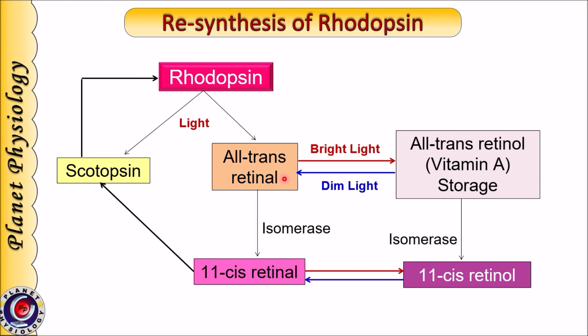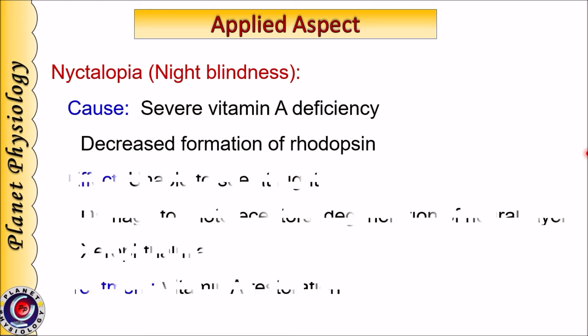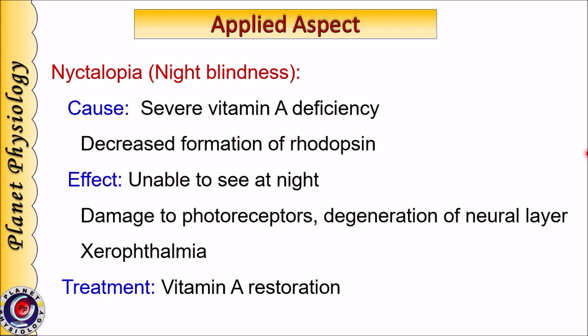Cones show similar changes to rhodopsin but operate during daylight. In case of vitamin A deficiency, a person is unable to synthesize the required quantities of 11-cis retinal during dark conditions. Hence, there is decreased formation of rhodopsin and the person is unable to see properly at night. This condition is known as night blindness, and the clinical term for it is nyctalopia.